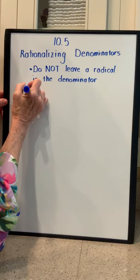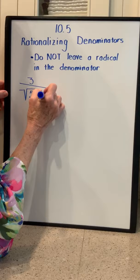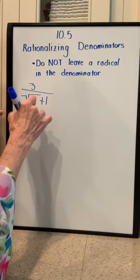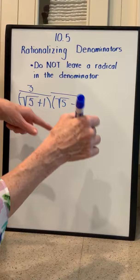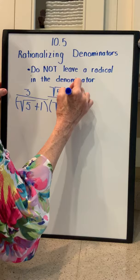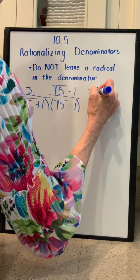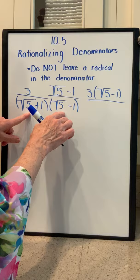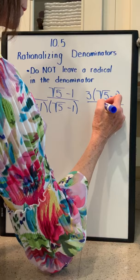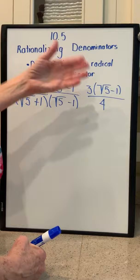We have 3 over the square root of 5 plus 1. We want to get rid of this radical, so we multiply by what is called the conjugate — the same numbers but with the opposite sign, changing the plus to a minus. If we do it in the denominator, we have to do it in the numerator. So we multiply by the square root of 5 minus 1 over the square root of 5 minus 1. In the numerator we leave it as factors: 3 times the square root of 5 minus 1. In the denominator, the square root of 5 times the square root of 5 is 5, the middle terms cancel, and minus 1 times 1 is minus 1, so 5 minus 1 is 4. Those are really easier than they look.